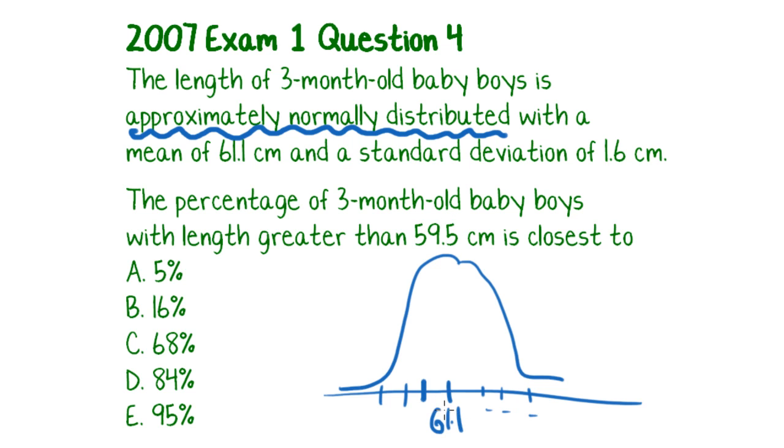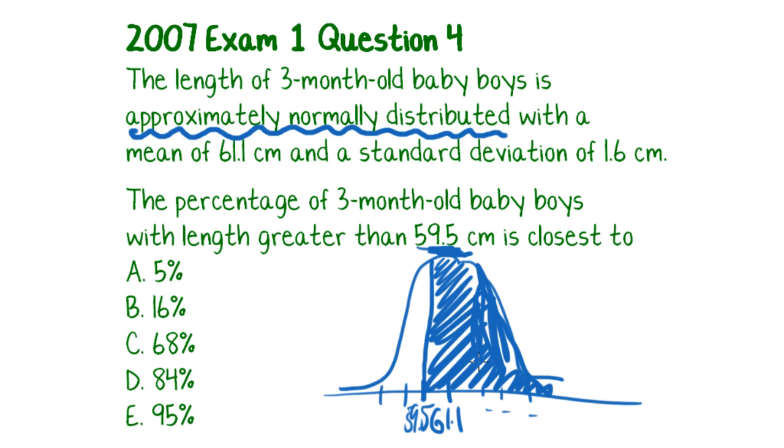So I don't need to do these 3 up here, I'm just going to go down standard deviations. So I'm going down by increments of 1.6, so 61.1 minus 1.6, ah well what do you know, it's 59.5. So I've already found that interval that I'm looking for, it's this one here. So they want to know the percentage of 3 month old baby boys with a length greater than 59.5. So they want to know everything from that line upwards.